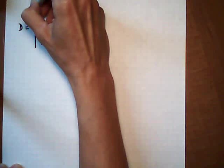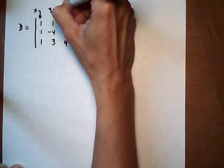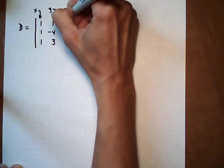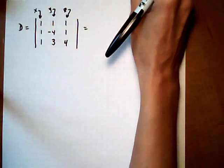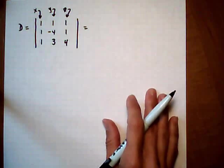And what I want you to think about as we build it is this first column is the x column for x coefficients, y column for y coefficients, and z column. Alright, just as it appears in our system, x, y, and z.